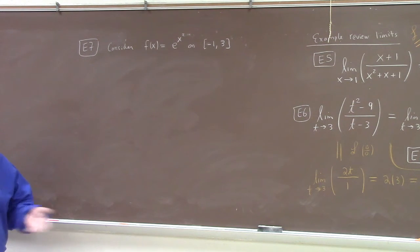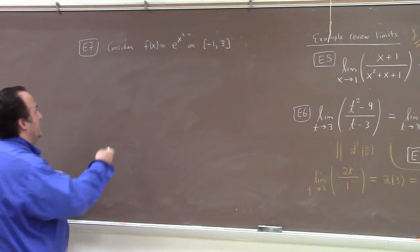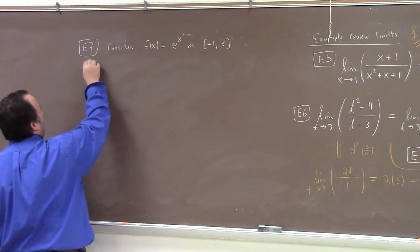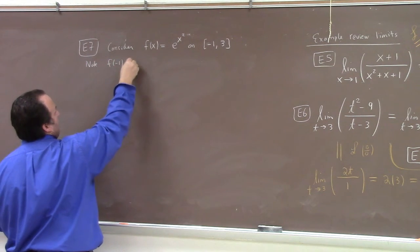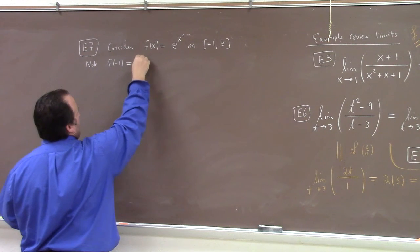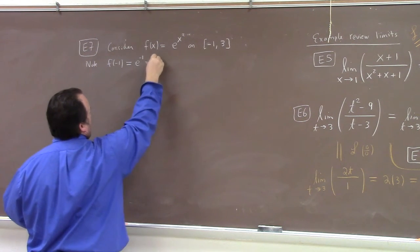at any interior critical points. So, you know, note f of minus 1 is e to the minus 1, right? Which is, of course, 1 over e.